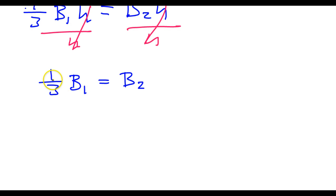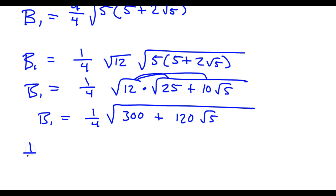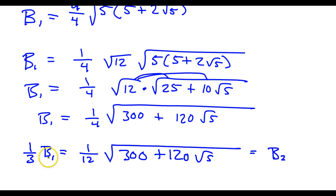Now remember that one-third B1 equals B2. So if I do one-third of B1 a third of one-fourth is one-twelfth. So I'm just multiplying both sides by one-third. So that's going to give me this and this is going to stay the same. But this should now equal B2.